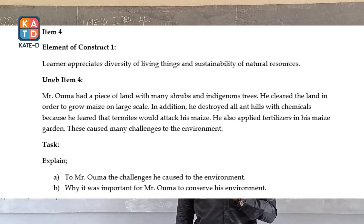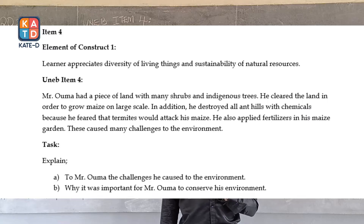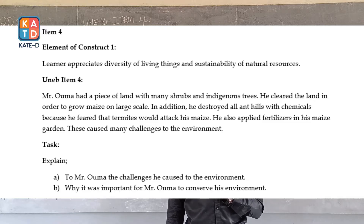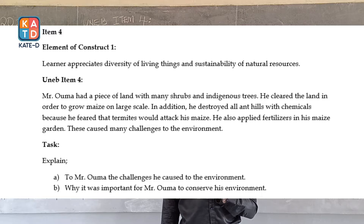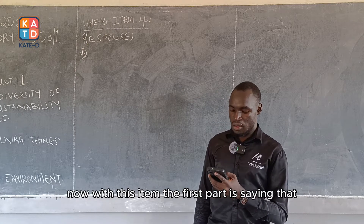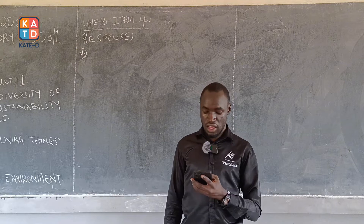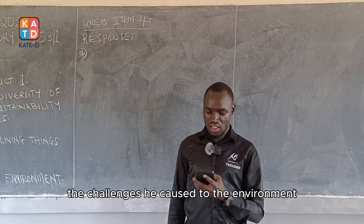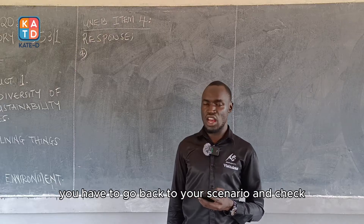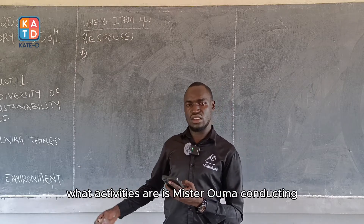The task has two parts. Part A: Explain to Mr. Ulmer the challenges he caused to the environment. Part B: Explain why it was important for Mr. Ulmer to conserve his environment. For part A, you have to go back to the scenario and check what activities Mr. Ulmer was conducting that are having challenges on the environment.